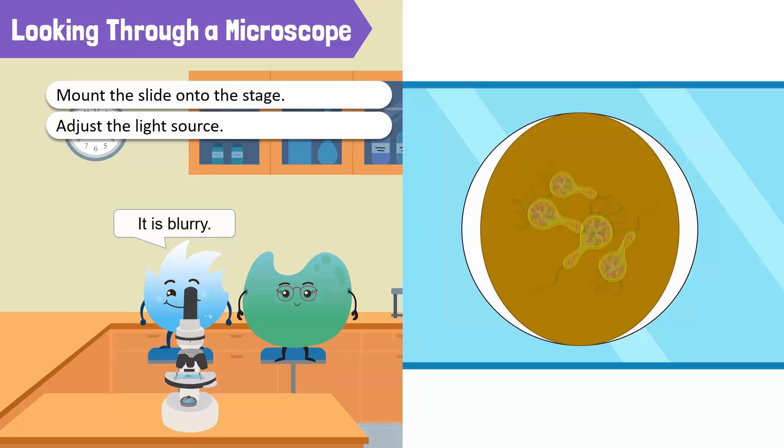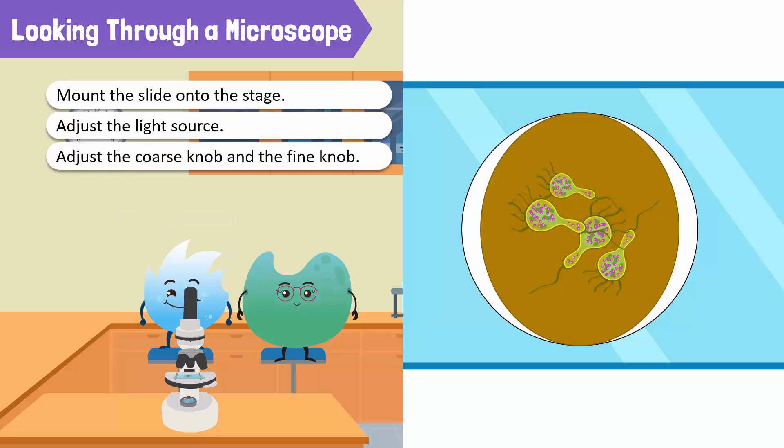That is because your specimen is out of focus. You need to adjust the coarse knob and fine knob to achieve a better focus. What do you see now? Yes, I can see microorganisms on the dirt. Whoa, there are so many of them. The microscope is so useful.